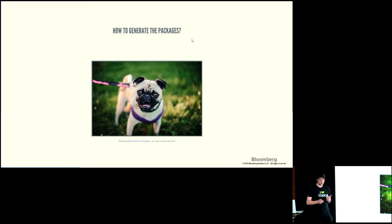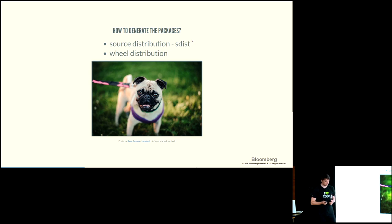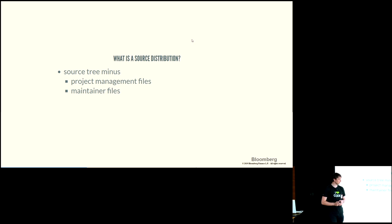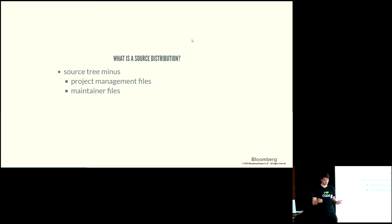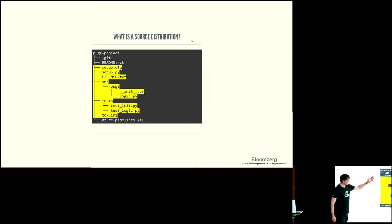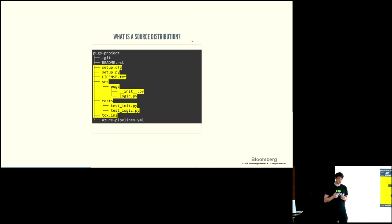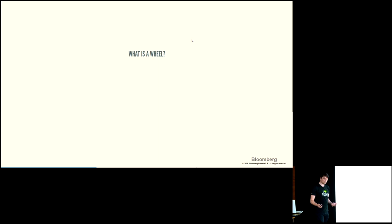When we install a package, we want both: the business logic and the additional metadata copied into site-packages. To generate this we have two options: a source distribution or a wheel. A source distribution is basically whatever you have in your working directory, minus the project management files and maintainer CI files, but still containing the business logic, packaging config, and tests. The reason to always include tests in a source distribution is so that whoever does the packaging on the other side can validate that the packaging succeeded.